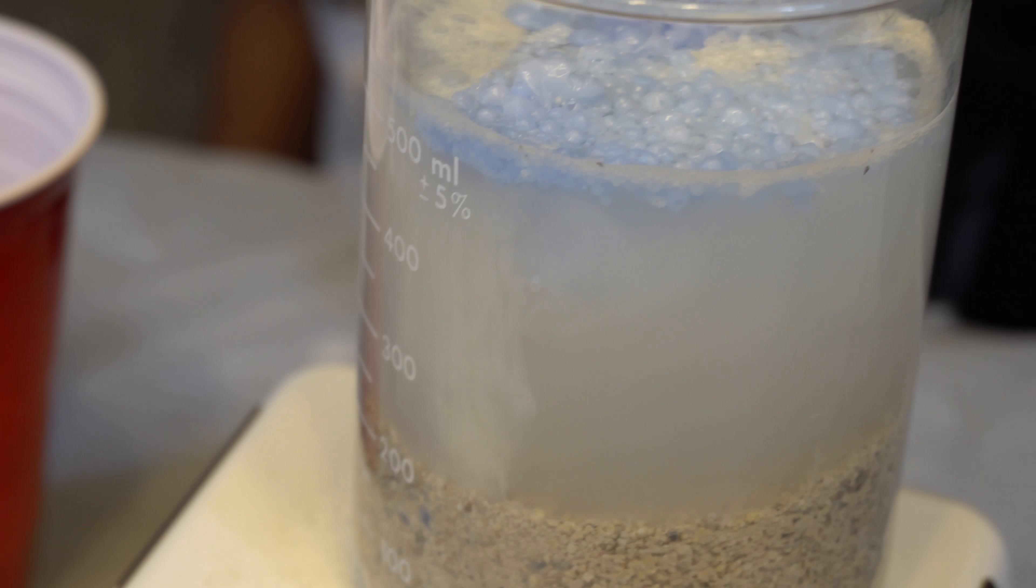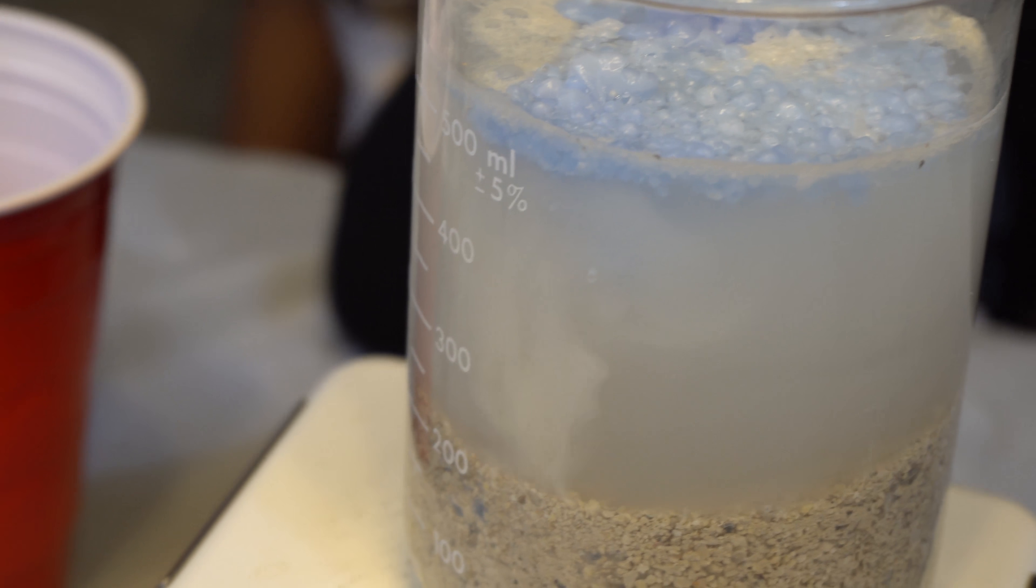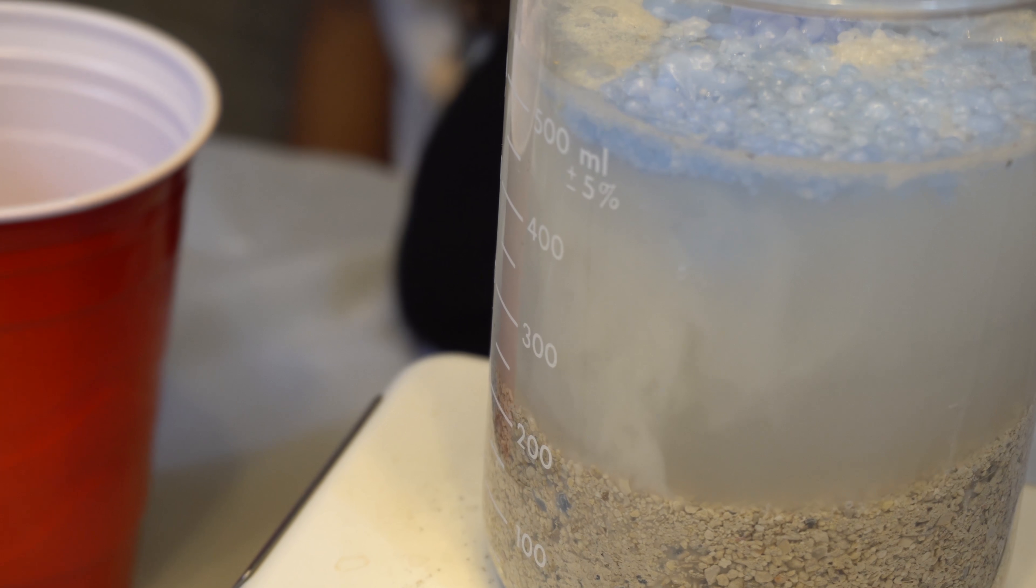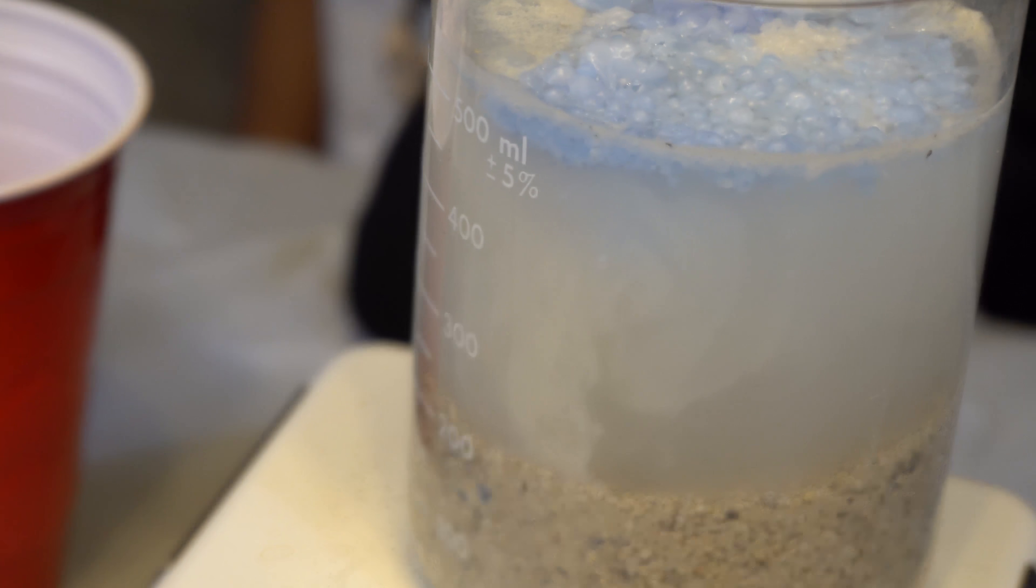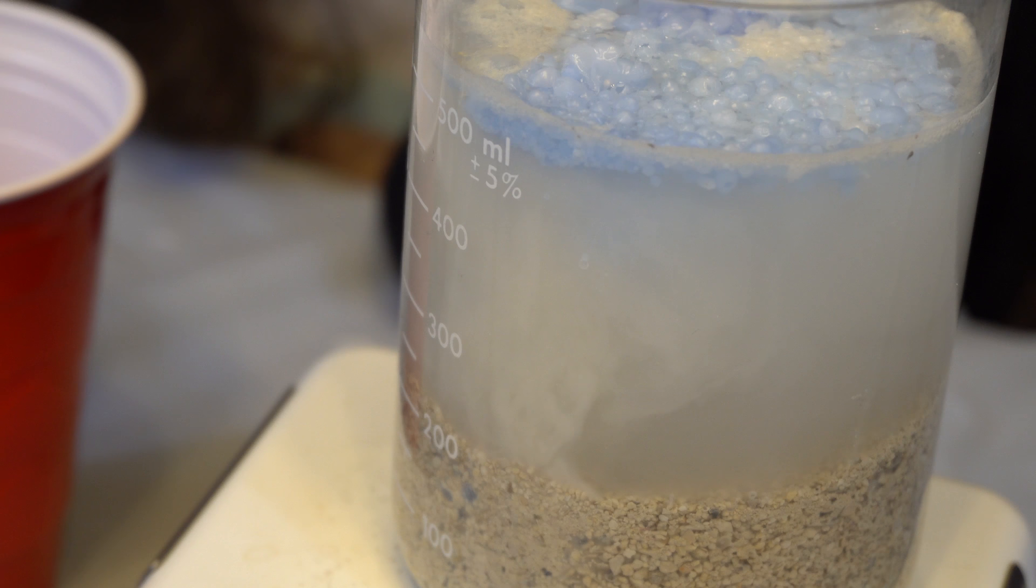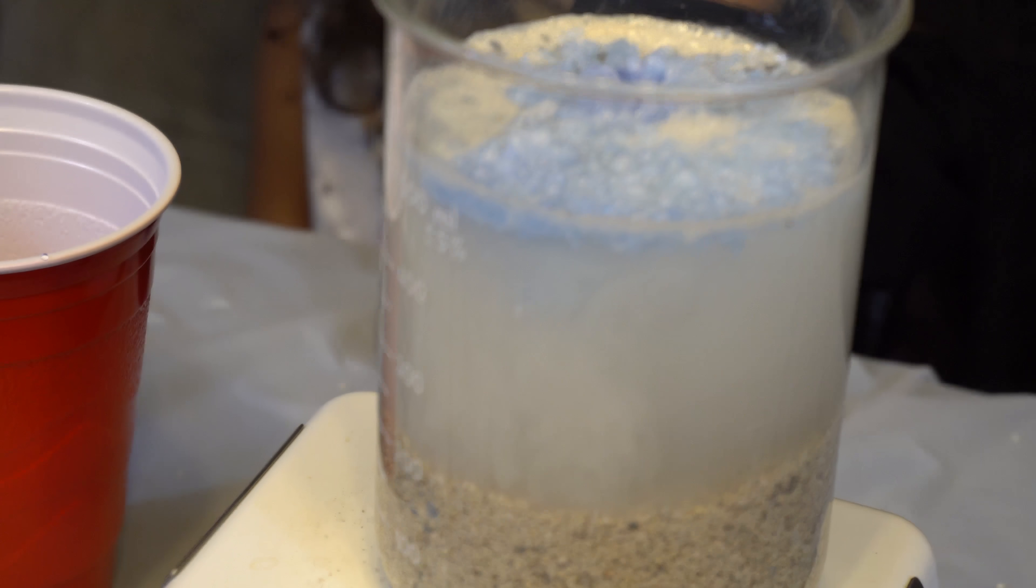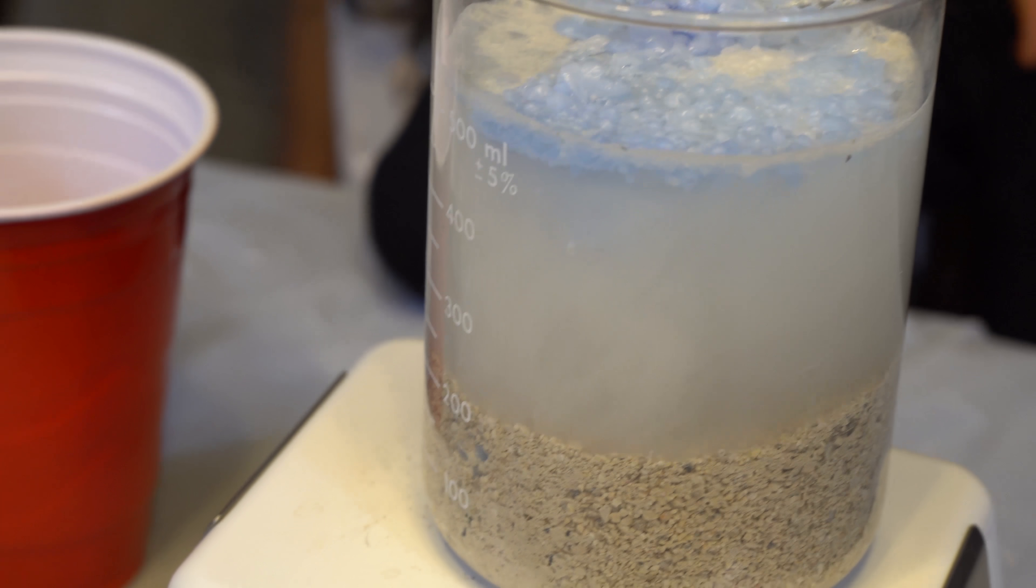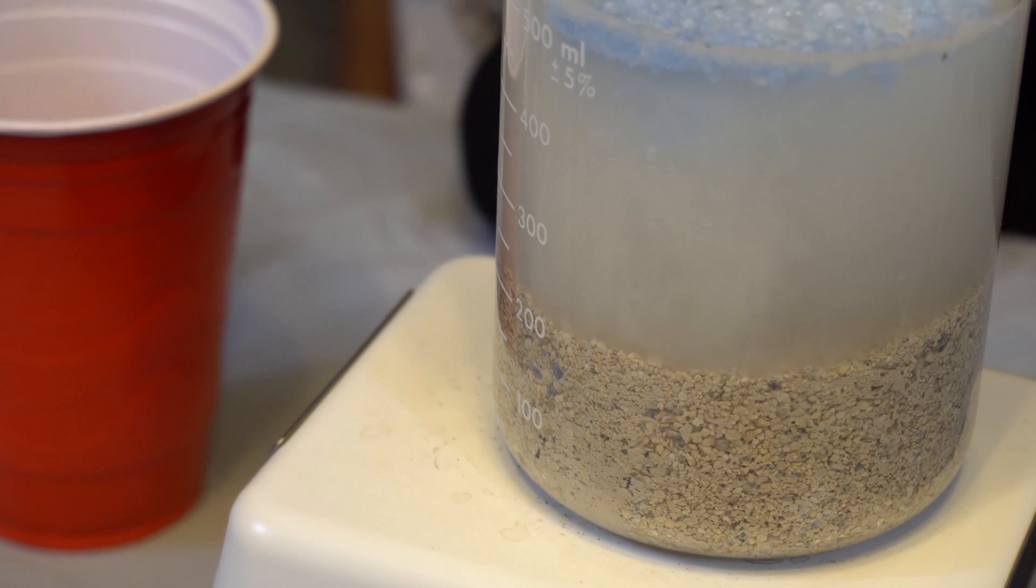And then the wax on the top is gonna form a little island, and that's what an underwater volcano would do. Form an island. You see how foggy it is in there now? And how it used to be a little clearer? That's because of all the steam.